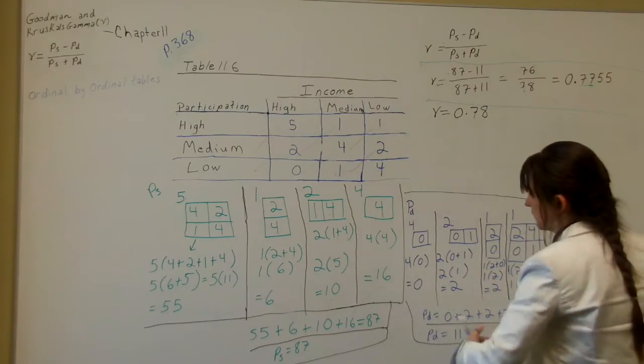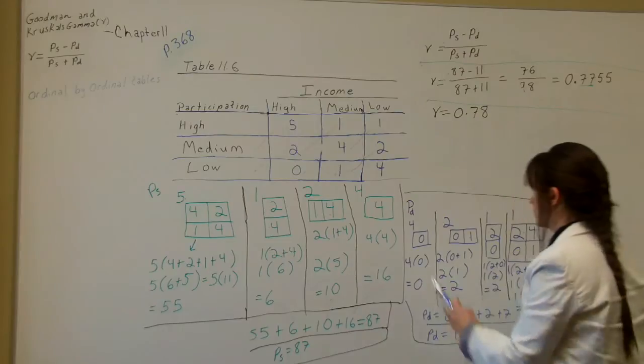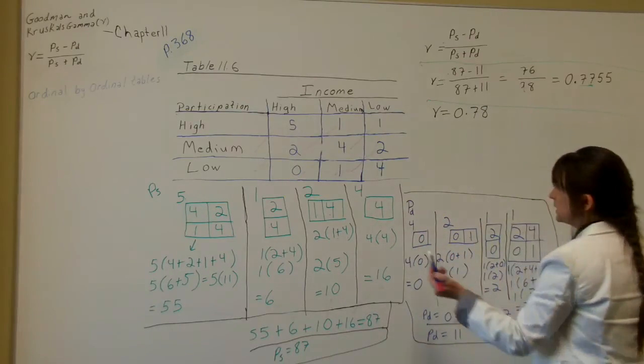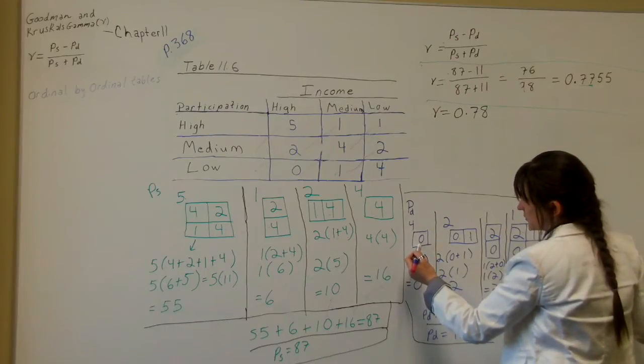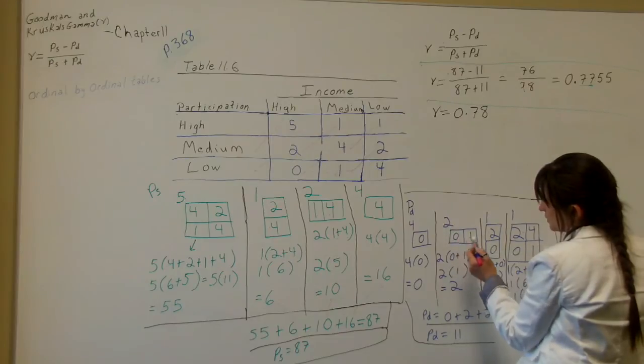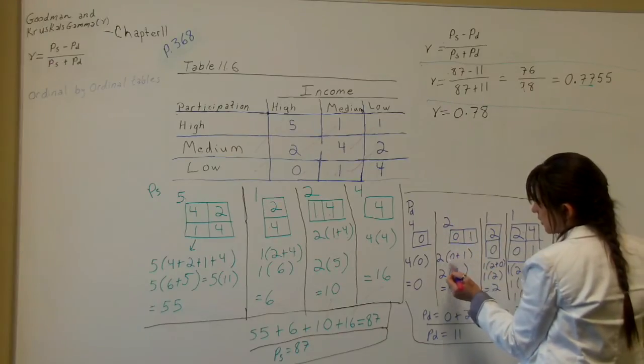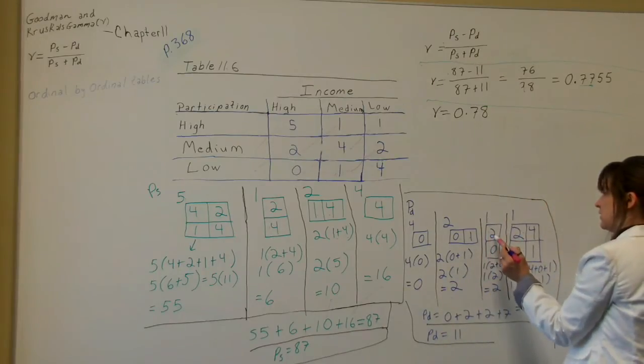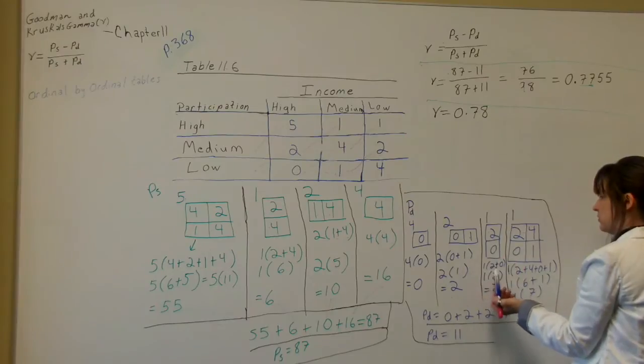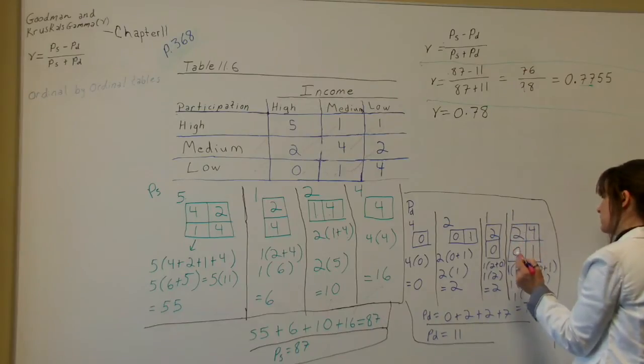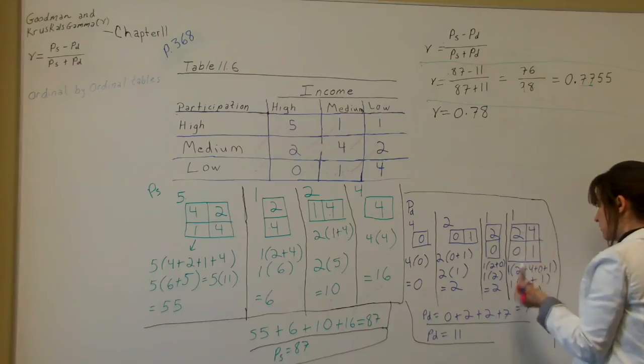And calculating this is the same as calculating the PS as far as how you work with the boxes, the number outside the box and the numbers in the box. So this would be 4 times 0 because there's nothing to add the 0 to. Equals 0. And this one is 2 times 0 plus 1. 0 plus 1 equals 1. So 2 times 1 equals 2. For this one here, it's 1 times 2 plus 0. 2 plus 0 equals 2. So that's 1 times 2 is 2.